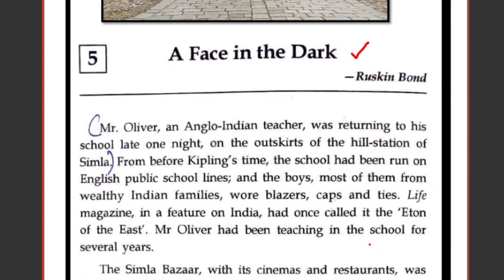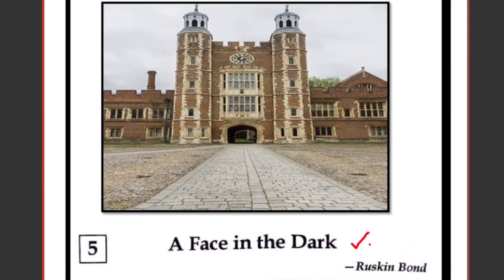Since 'A Face in the Dark' is written by Ruskin Bond, we must first know a little about the author. Ruskin Bond is one of the most popular Indian authors of British descent. He was born at Kasauli in Himachal Pradesh in 1934 and grew up in Jamnagar, Dehradun, and Shimla — all beautiful places with mountains and hills. He has written over a hundred short stories, essays, novels, and more than 30 books for children. He currently lives in Mussoorie.